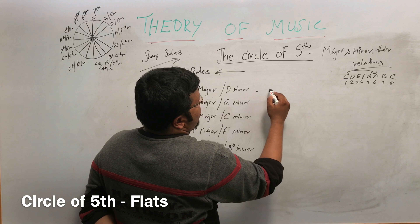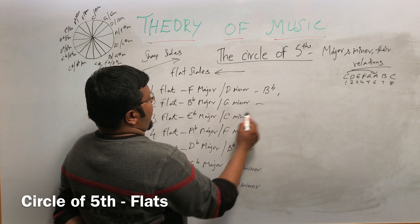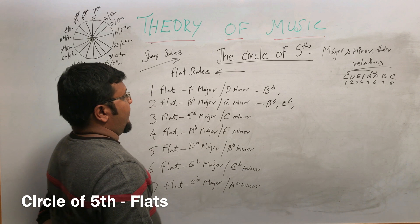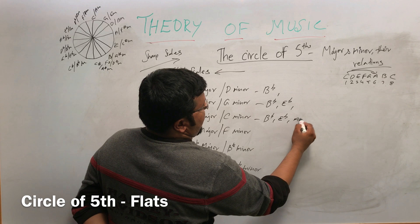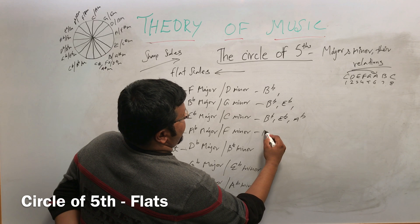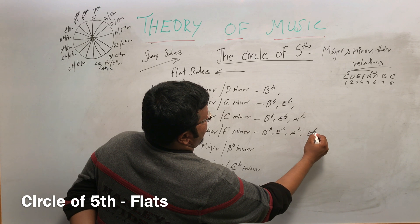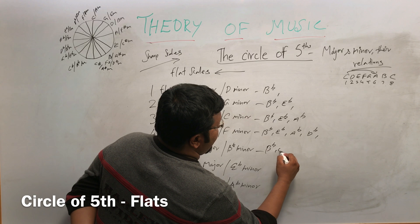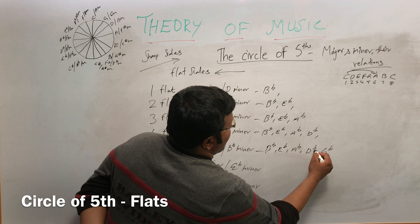For F major, it has only one flat note — B-flat. In B-flat major, the flats are B-flat and E-flat. In E-flat major, the flats are B, E, and A. In the four-flat scale, the flats are B, E, A, and D. In the five-flat scale, the flats are B, E, A, D, and G.